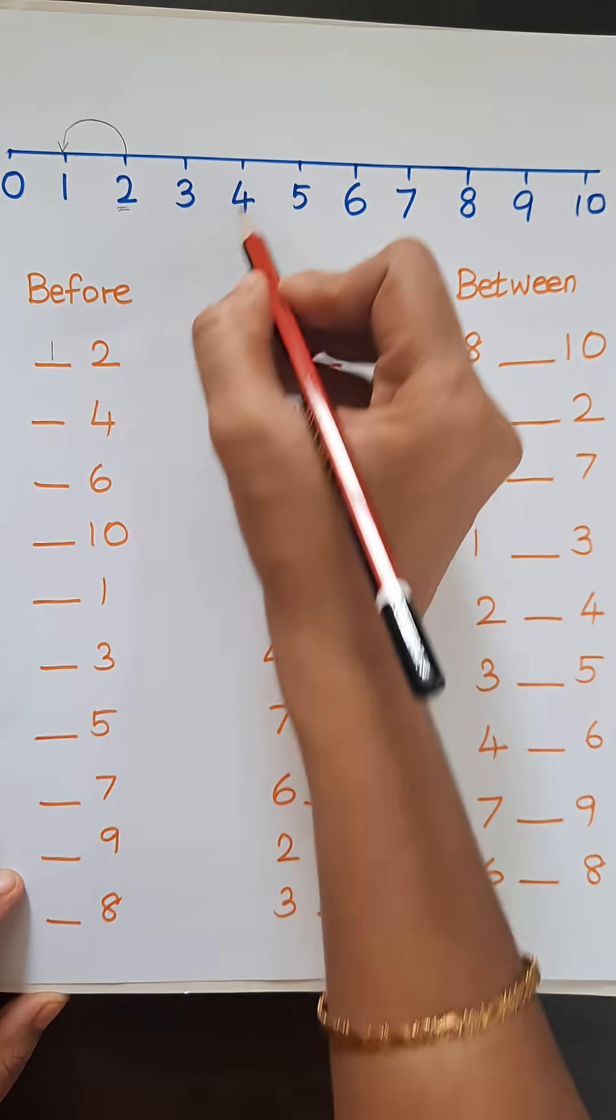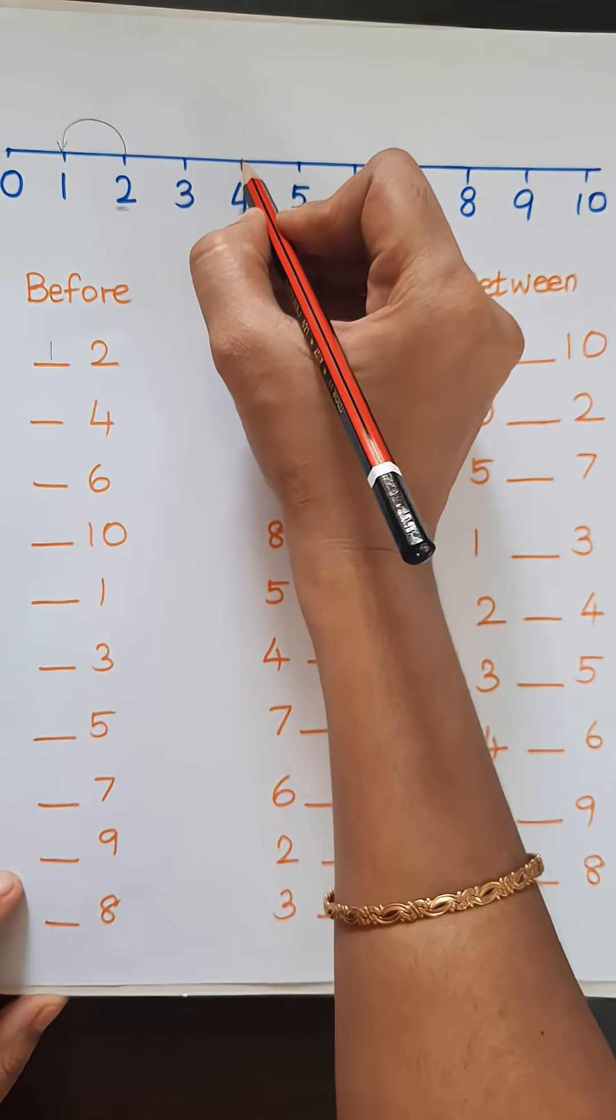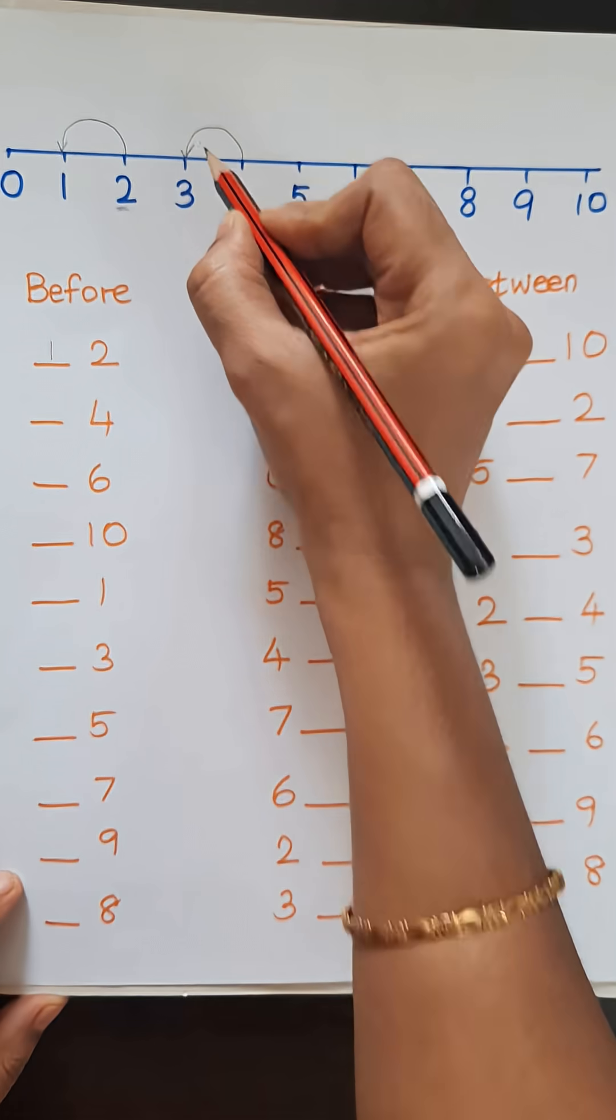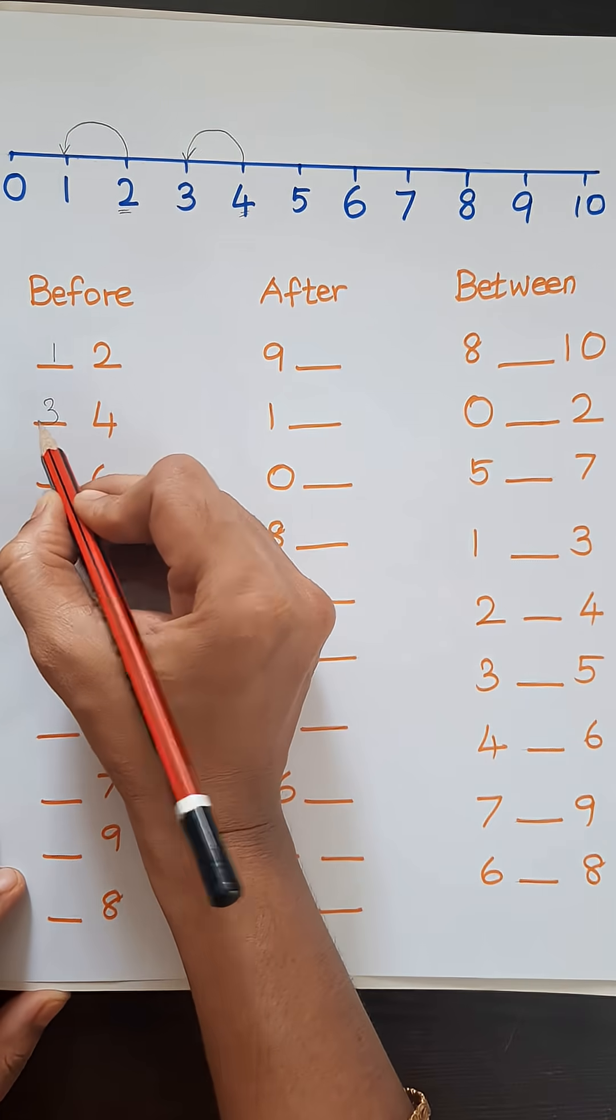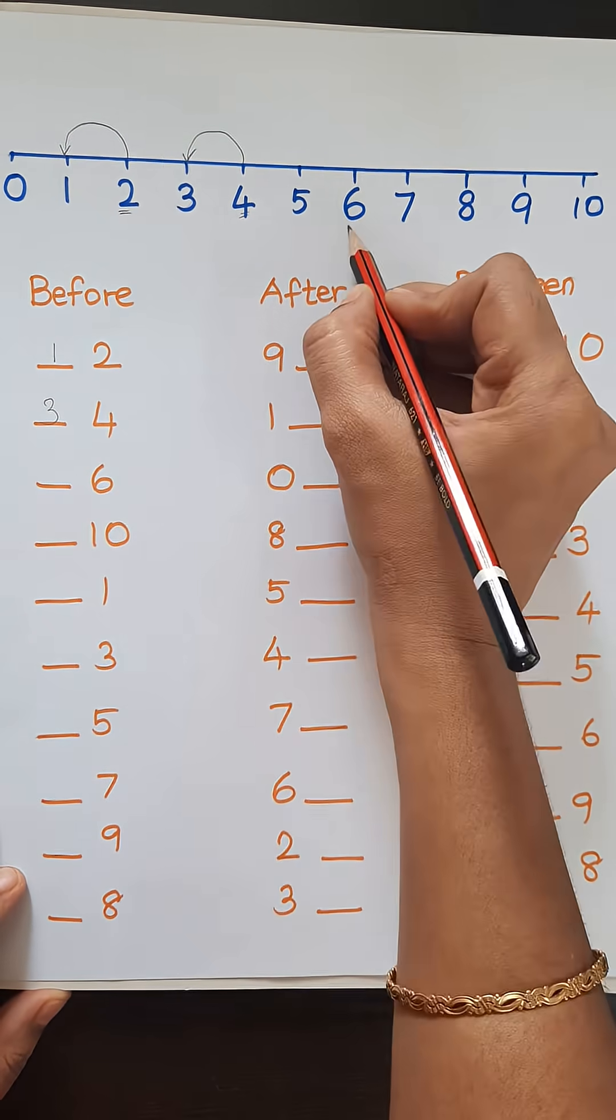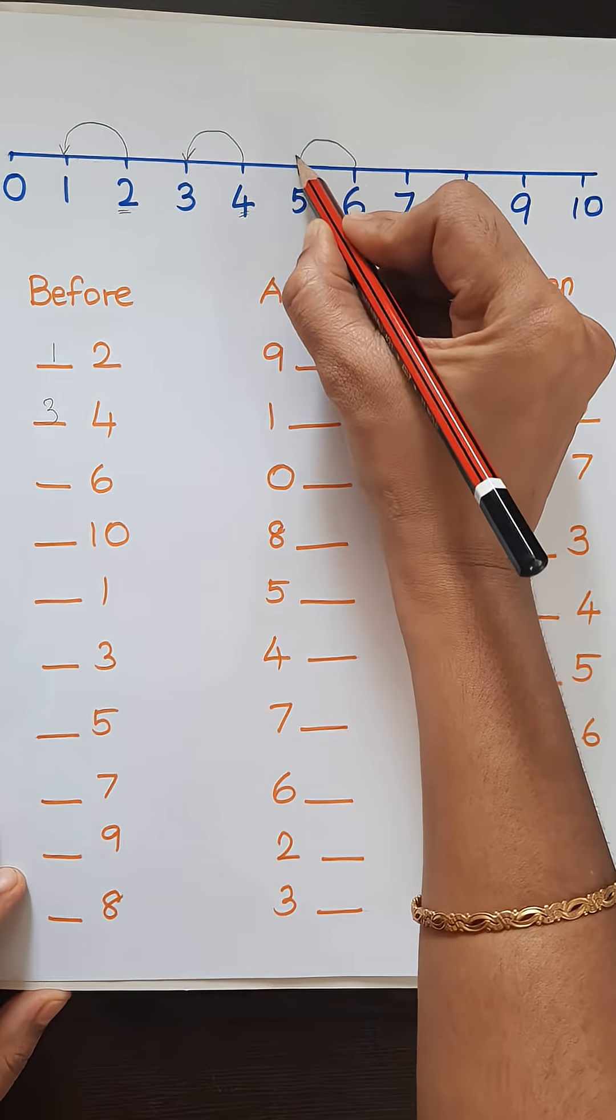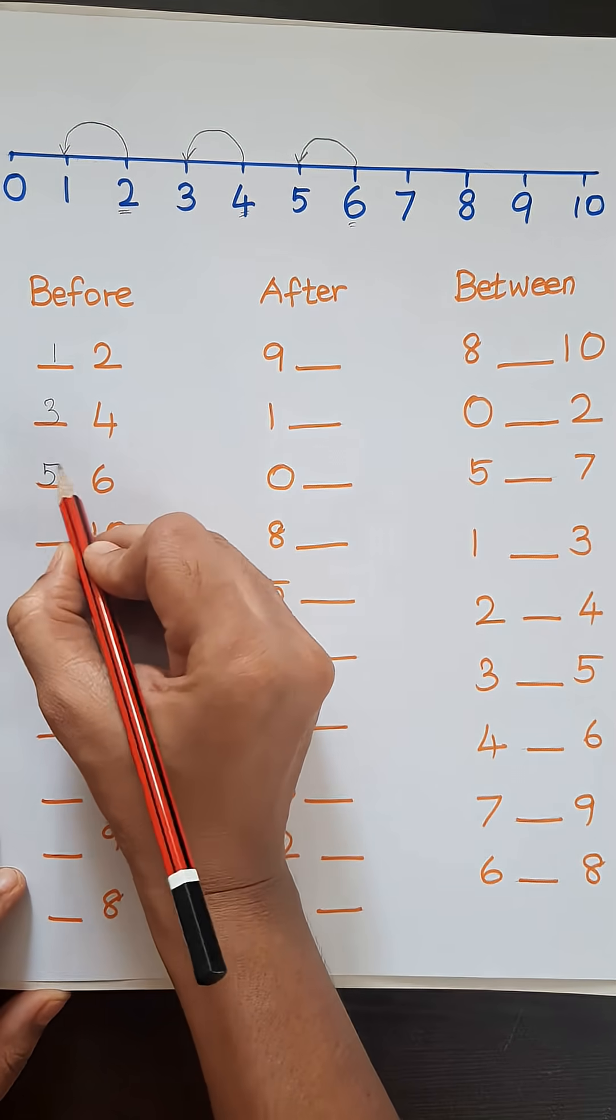Next number is 4. What is the before number? 3. So we will write 3. Next number is 6. So what comes before 6? 5. So we will write 5.